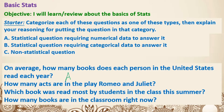Question number two: how many acts are in the play Romeo and Juliet? For this one, no matter who you ask, you are going to get the same answer. So there's actually no variability in your answers, which is why this is going to be Type C.